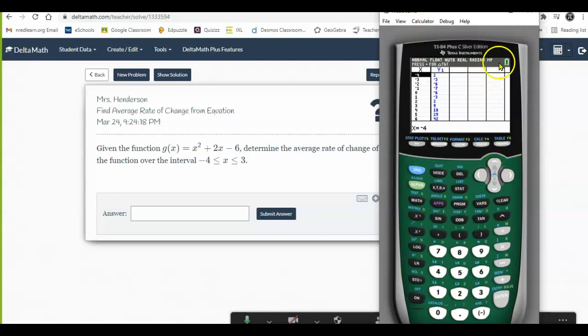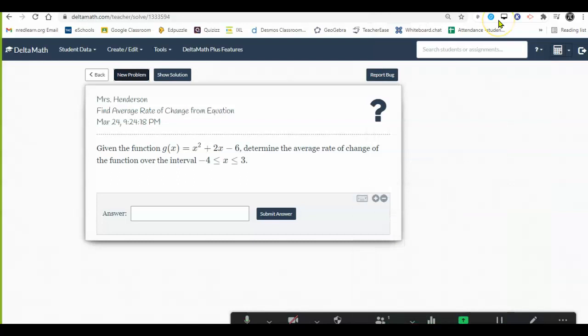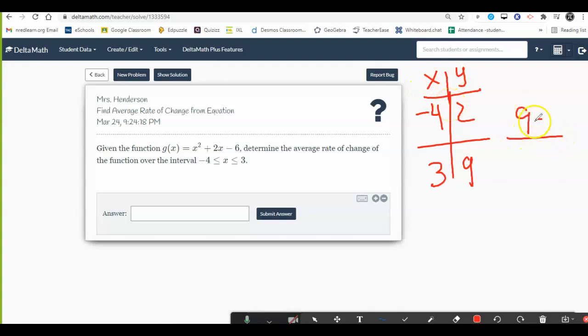Negative 4, 2, and 3, 9. Those are my x and y values. Set up my slope fraction, y minus y over x minus x. Notice I have two minus signs in a row here. So I'm actually going to get 7 over 7, also known as 1. Let's check it. Fantastic.